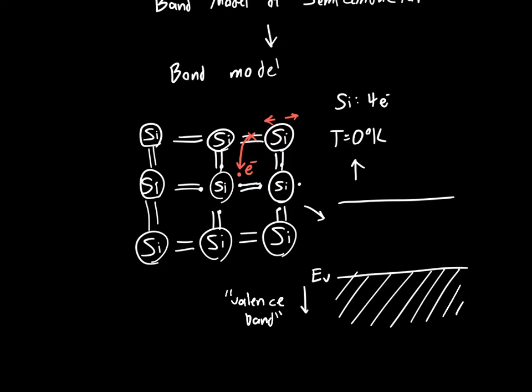So the valence band is when the electrons don't have enough energy to escape. Now, as you start to increase the temperature and electrons start to escape, we say that they are excited into the conduction band, EC. And we call it the conduction band just because once the electron is freed from its bond, it can move around and it can conduct electricity in the conduction band.